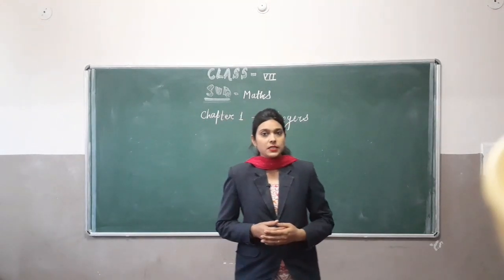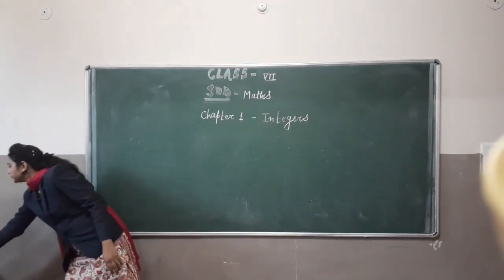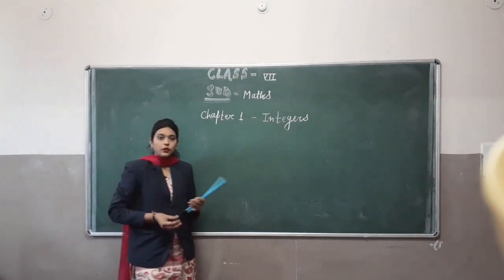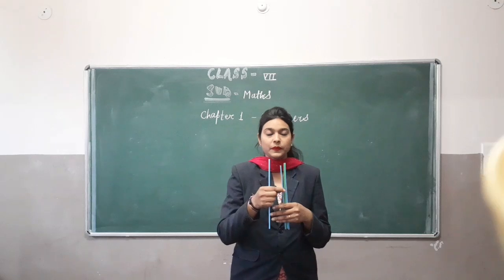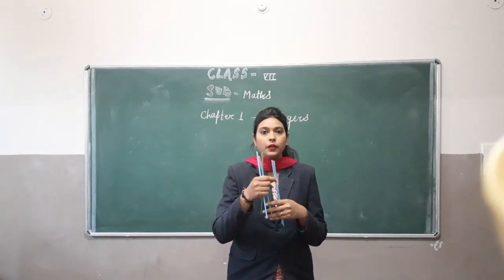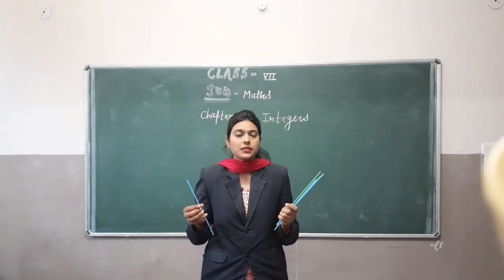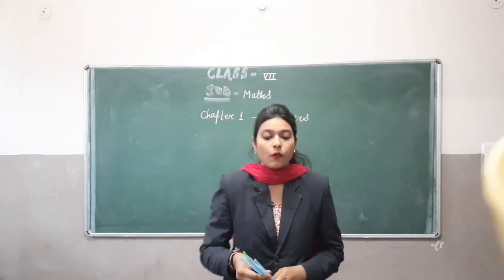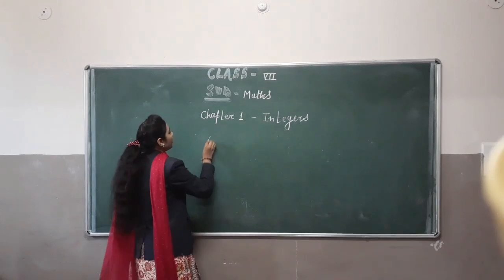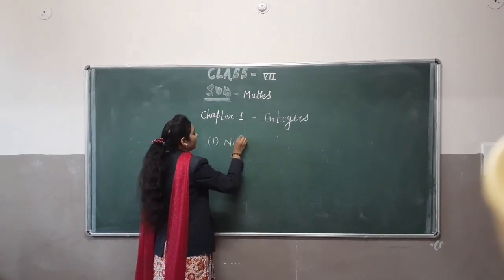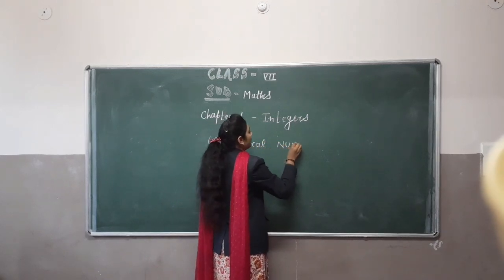Before starting integers, we have to know what natural numbers are. I have some sticks with me. If someone tells us to count the sticks, we usually count like 1, 2, 3, 4 and so on. So these counting numbers are known as natural numbers. All counting numbers from 1 to plus infinity are natural numbers.